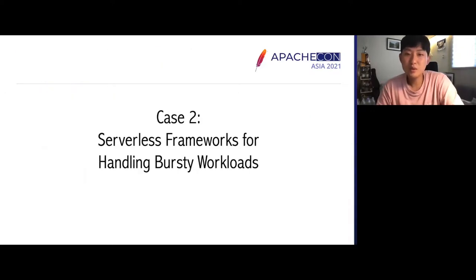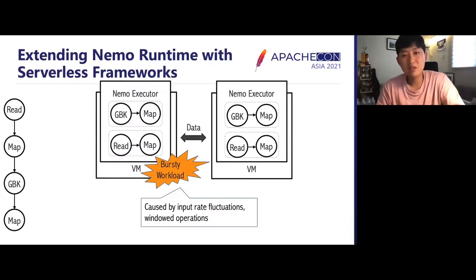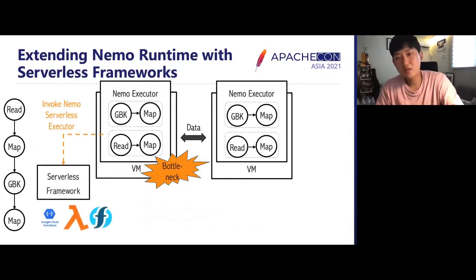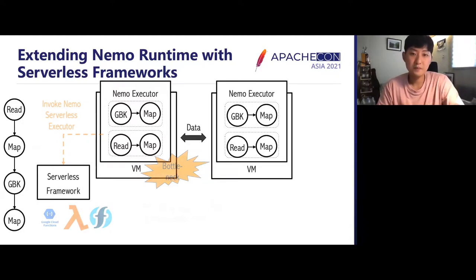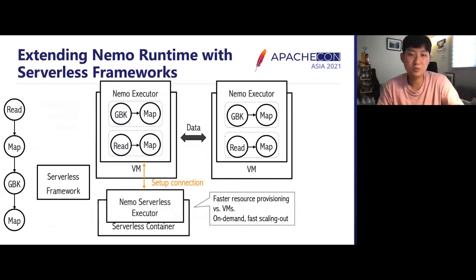We also propose a method for using serverless frameworks for scaling out bursty streaming workloads — the situation when workloads suddenly require more resources due to input rate fluctuations or windowed operations. Nemo tries to invoke serverless executors instead of virtual machines through existing serverless frameworks, as serverless frameworks provide faster resource provisioning and boot-up time compared to virtual machines and can be invoked on demand.